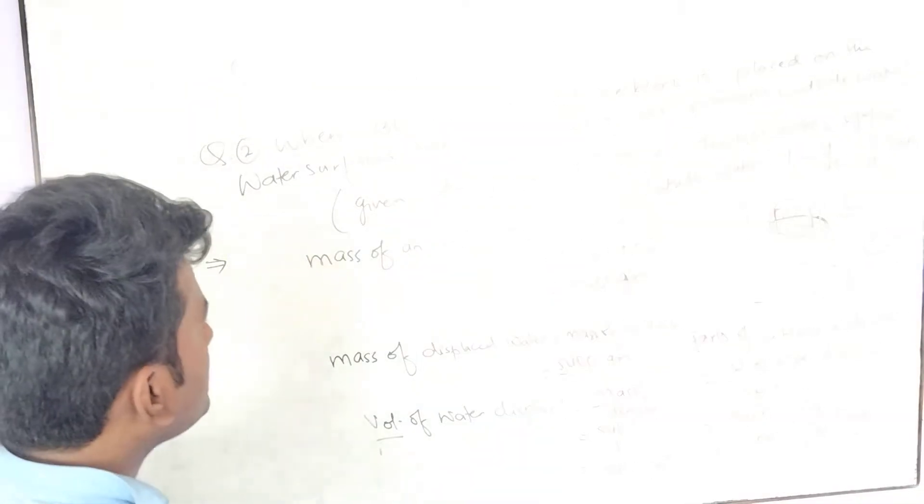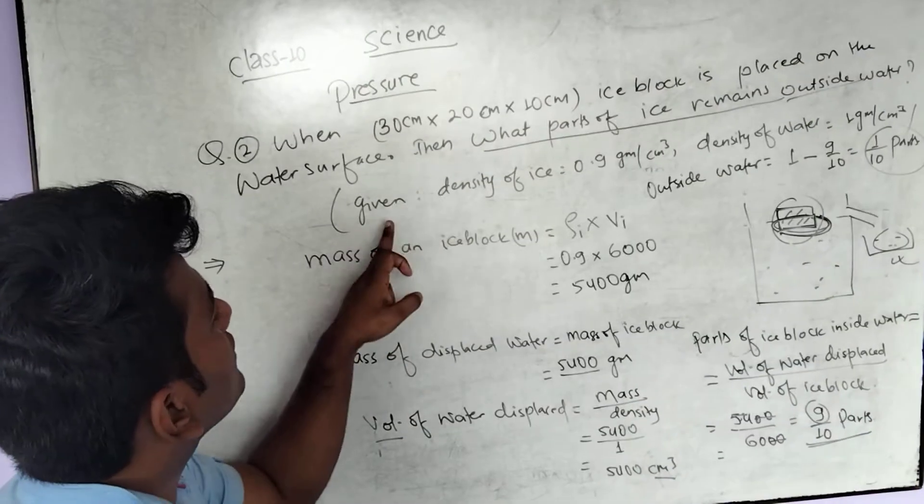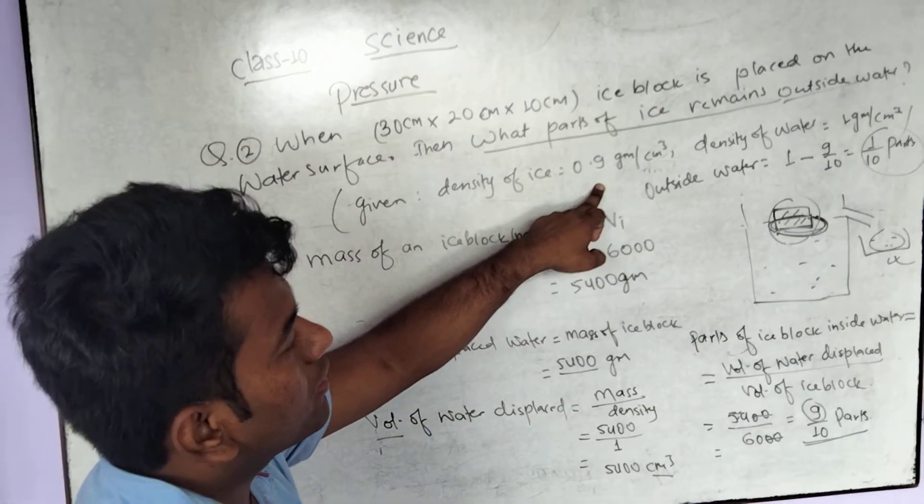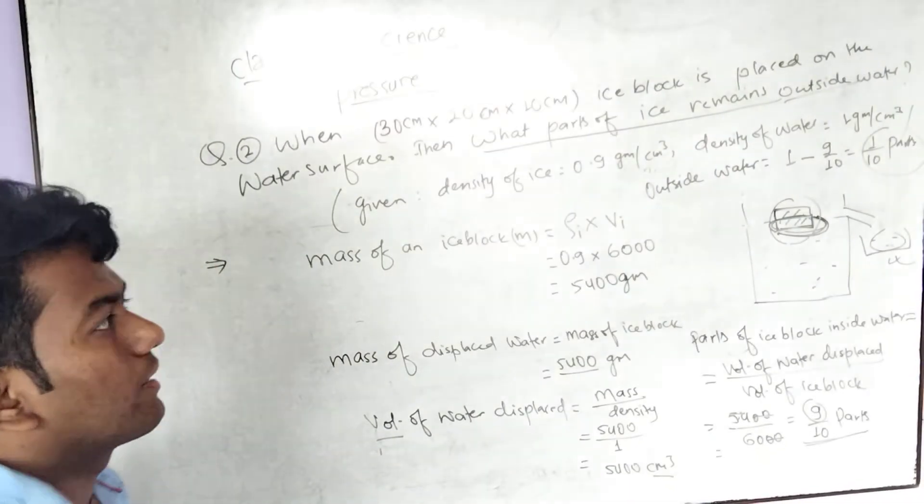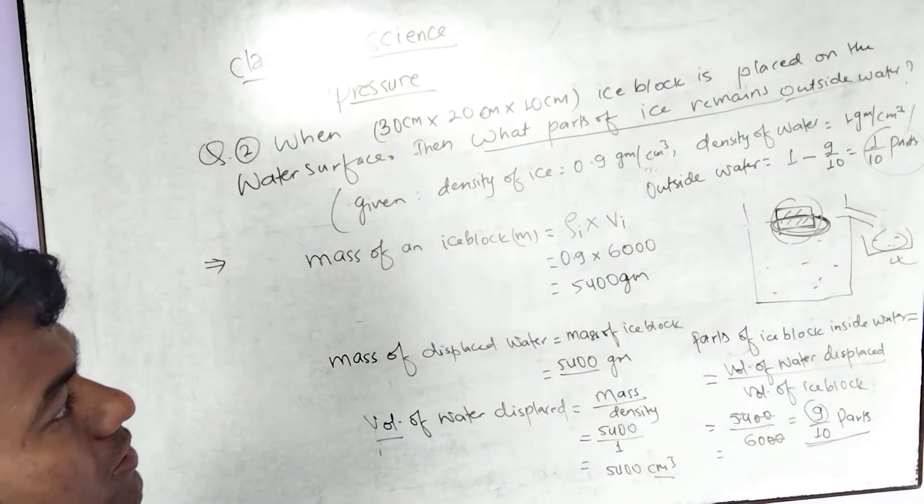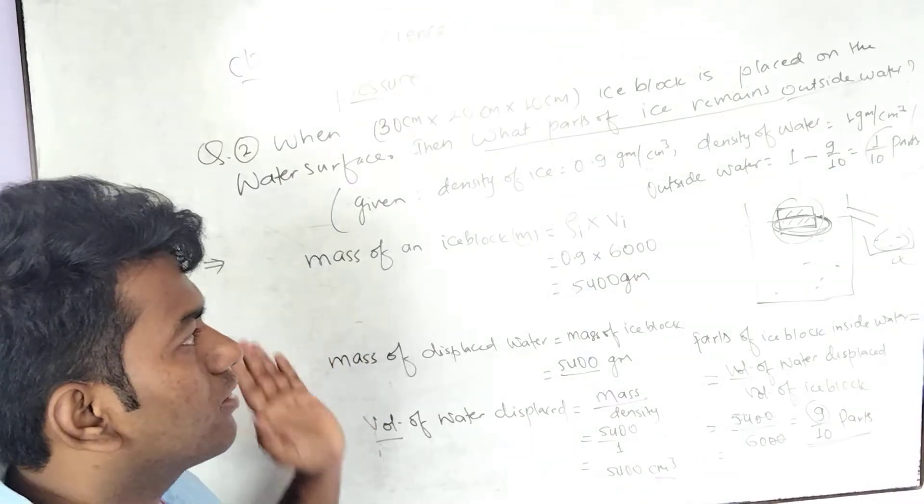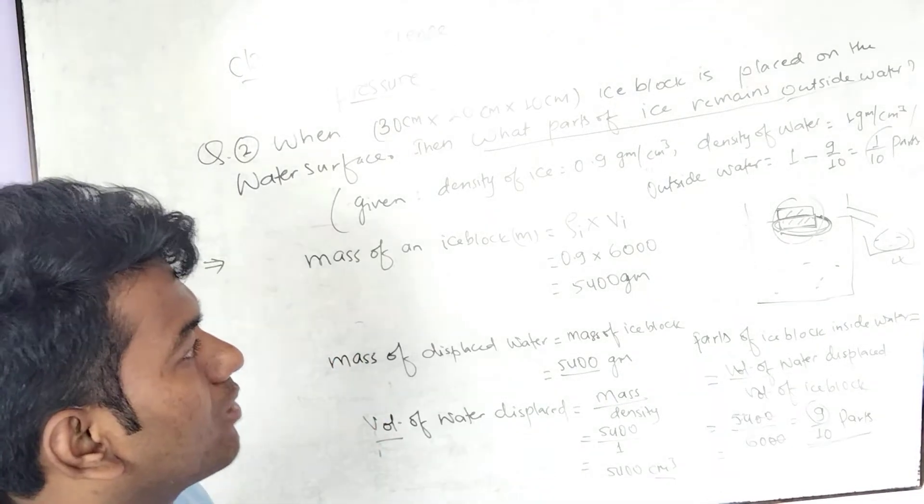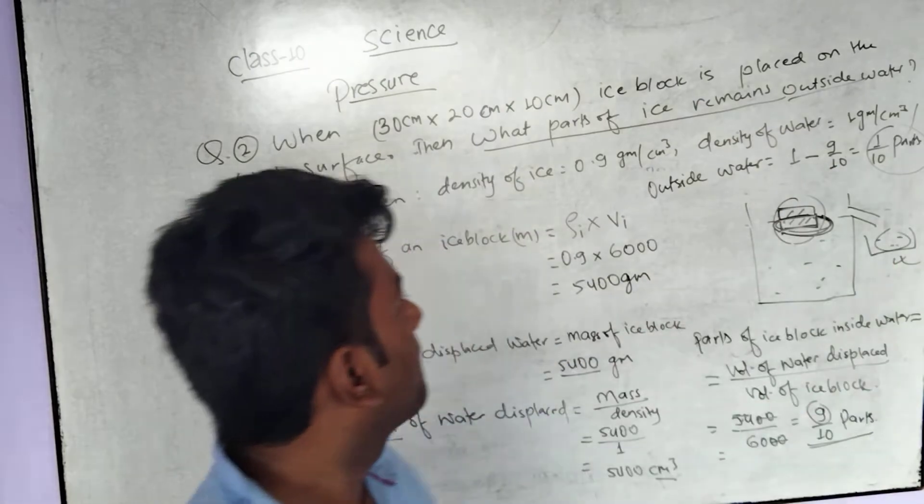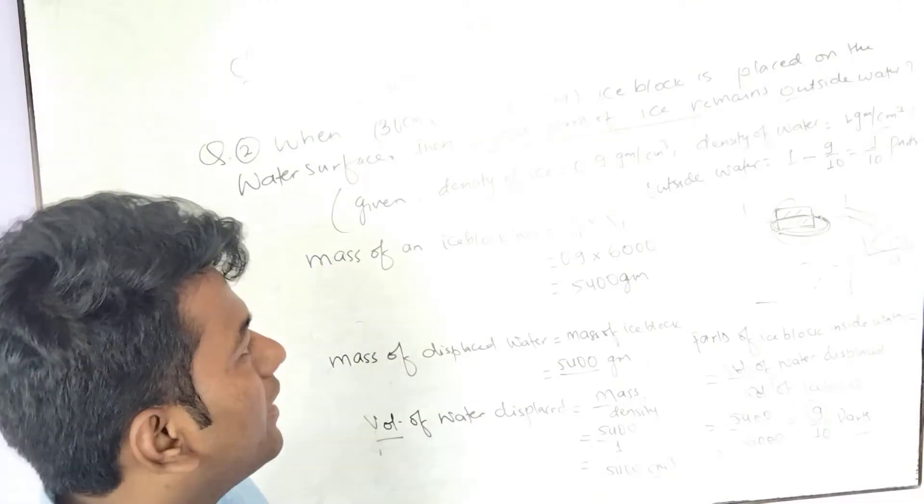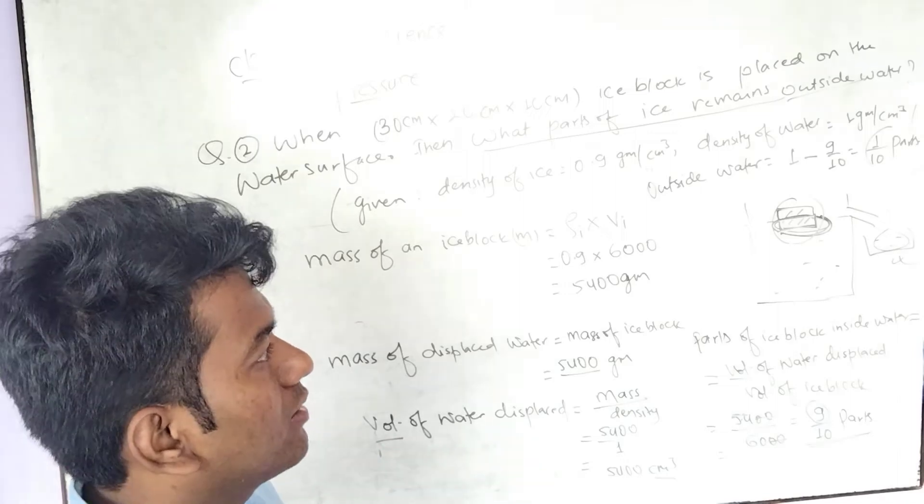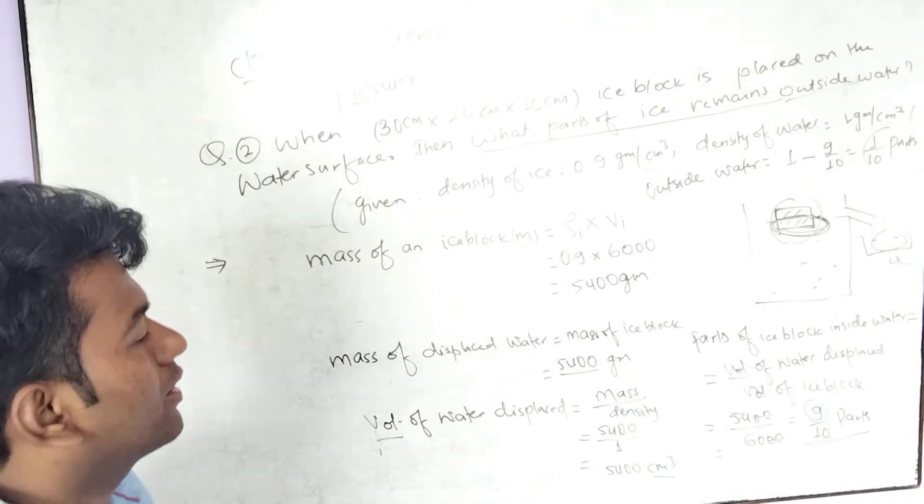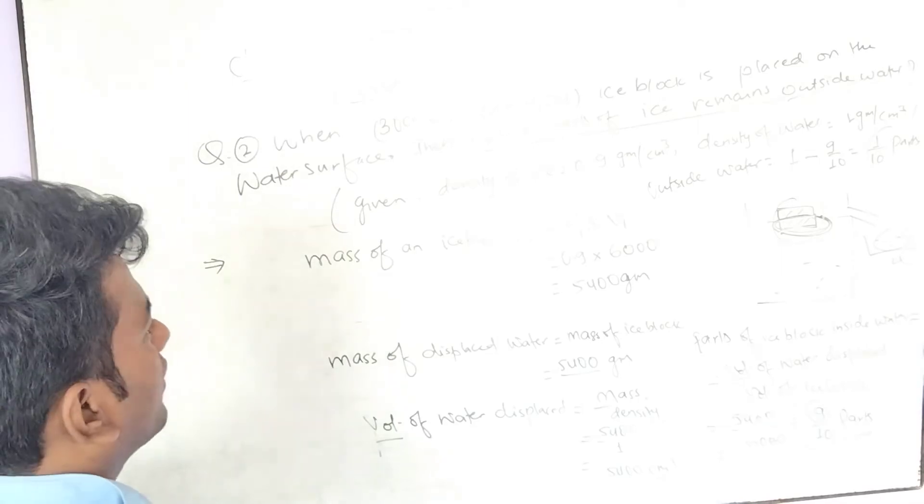The density of ice is 0.9 grams per centimeter cube. The density of water is given. In the CGS system, it is 1 gram per centimeter cube. In the SI system, the density of water is 1000 kg per meter cube.